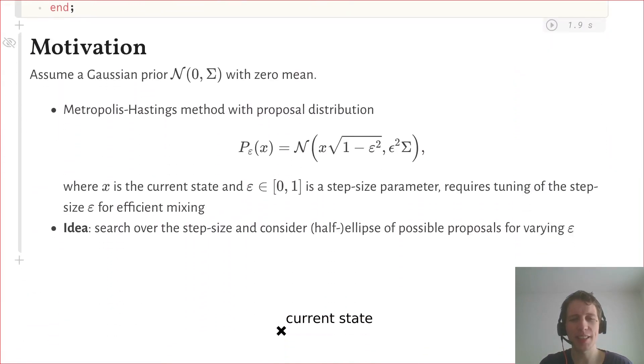Elliptical slice sampling is motivated by a Metropolis-Hastings method with the proposal distribution that you can see here, where epsilon is a step size parameter. And so to achieve good mixing, one has to tune the step size parameter.